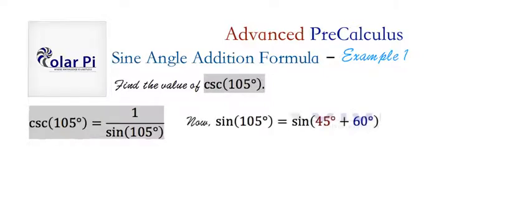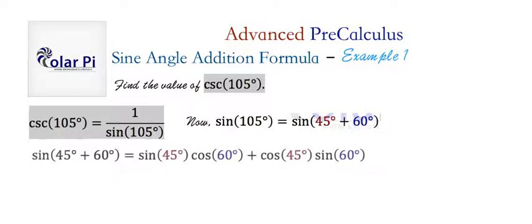Now we can say that sine of 105 is the same as sine of 45 plus 60, and from here we use the sine angle addition formula, and we can write that sine of 45 plus 60 is this right-hand side, and you can read, so I'm not going to read it.